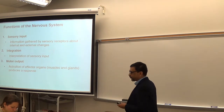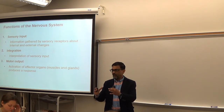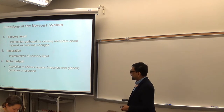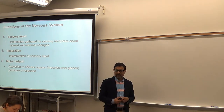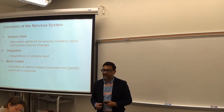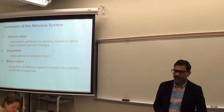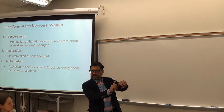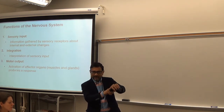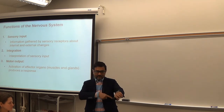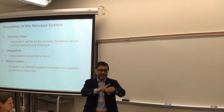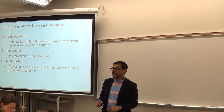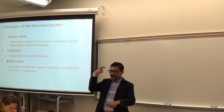Your nervous system performs thousands of functions, but we can group those into three types: sensory input, integration, and motor output. For example, if I touch your body with something very hot, that signal from the skin goes to your brain — that is sensory input going towards the brain. The stimulus, in this case heat or temperature, is going towards the brain.